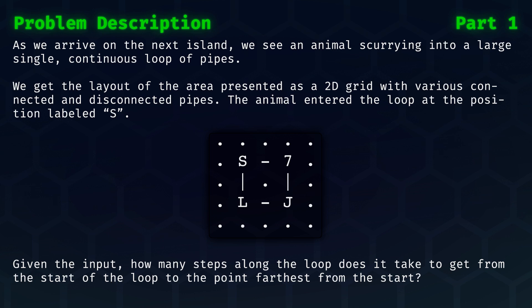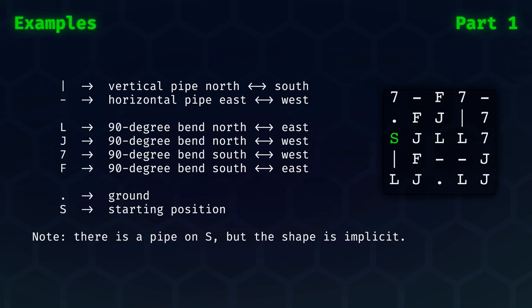Let's go into some examples to understand the problem and our input better. First off, let's explain the characters in our input. There are six types of pipes. First, we have the horizontal and vertical pipes, which connect north to south and east to west.